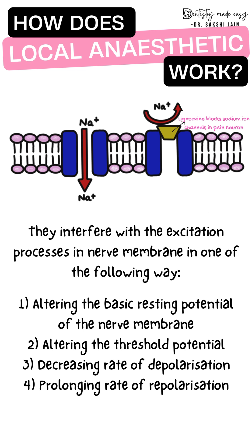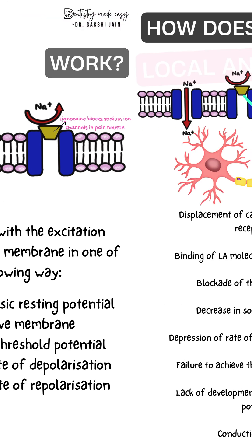Polarization is maintained by the sodium pump, which controls sodium ion concentration on both sides of the membrane. Depolarization occurs when a stimulus is applied — the nerve gets depolarized with a rapid influx of sodium ions and a slow efflux of potassium ions. Repolarization then follows as permeability decreases and the influx of sodium is restored.